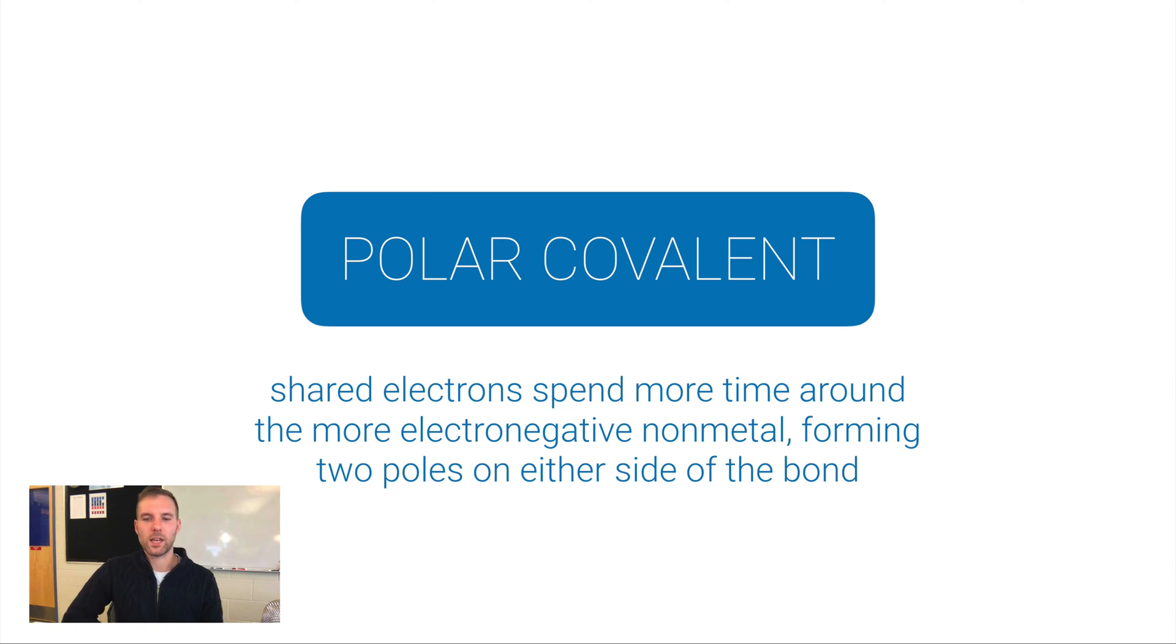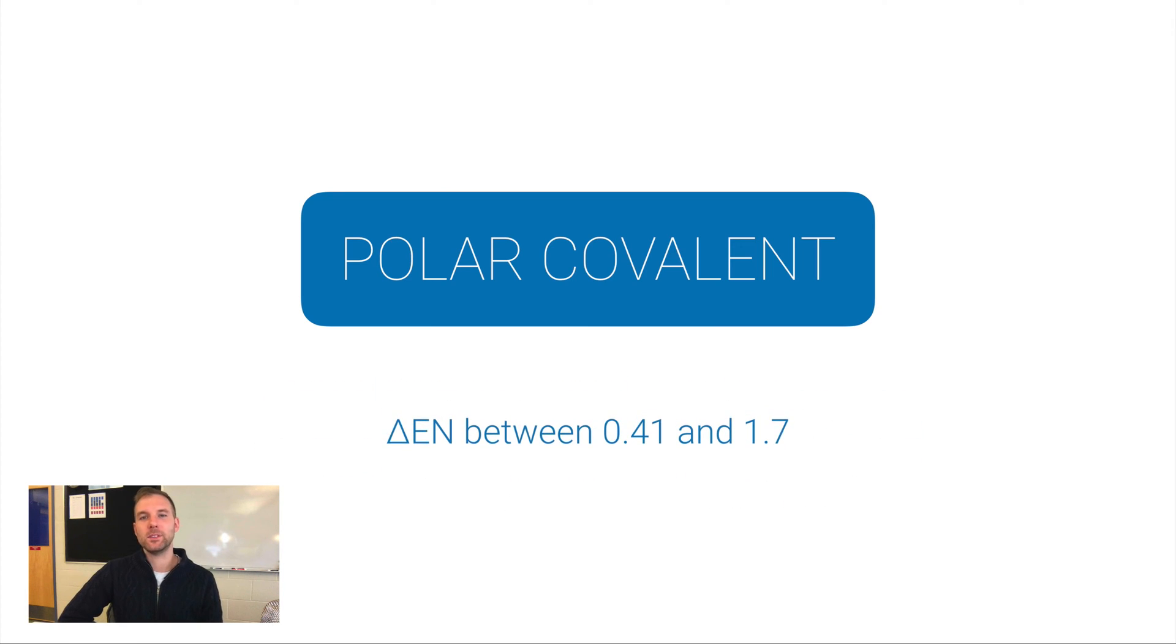When that happens, those electrons will form two poles on either side of the bond. The side that has the electrons spending more time around it is going to build up this partially negative charge because electrons are negative. The side that doesn't see those shared electrons as often forms a partial positive charge.